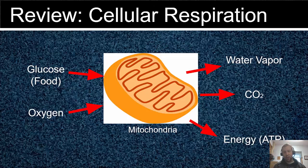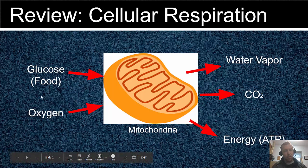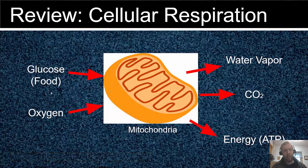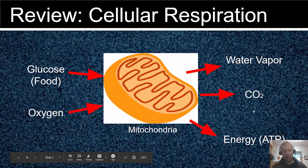Just to review again, this is cellular respiration. Last time we saw how glucose entered our mitochondria through the digestive system. This time we see that oxygen is a key component to cellular respiration, which gives us the energy that we need.